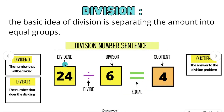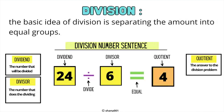The dividend is the number that will be divided. The divisor is the number that does the dividing. And finally, the quotient is the answer to the division problem.